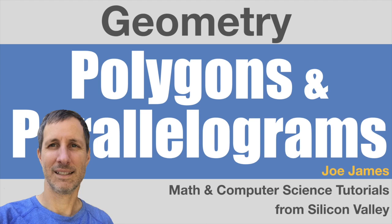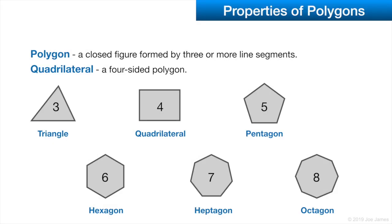Hi, I'm Joe James, and in Geometry Video 3, we're going to cover polygons and parallelograms. A polygon is a closed figure formed by three or more line segments. In other words, it has straight edges, and it's a closed shape.